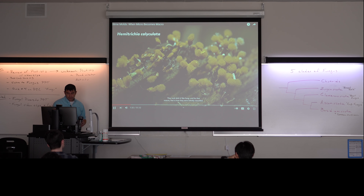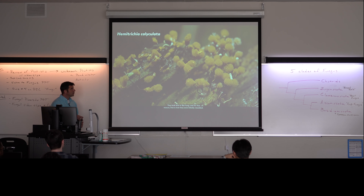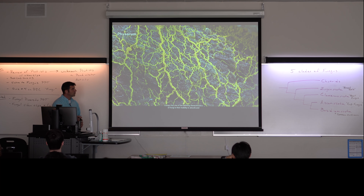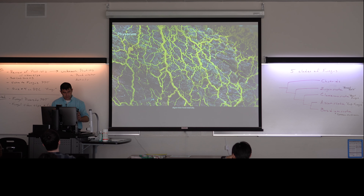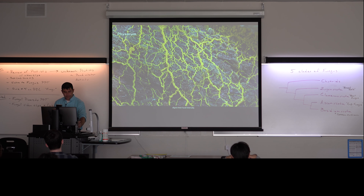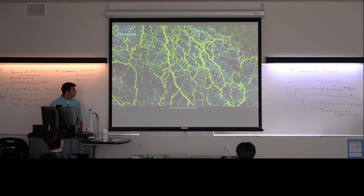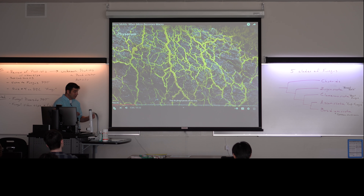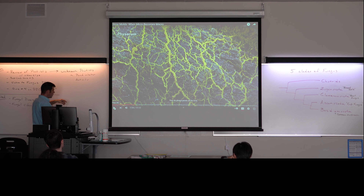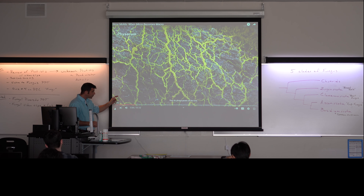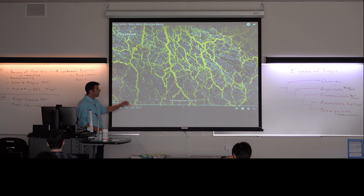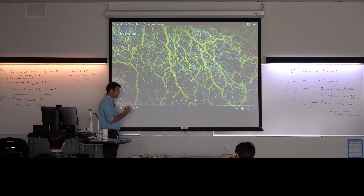They look kind of like fungi, and for that reason that is how they were initially classified. Except that one of the defining characteristics of fungi is their inability to absorb and digest their food internally — slime molds, however, are plenty capable of that. They do phagocytosis all the time. Just a quick distinction since we're about to introduce fungus: one thing that this plasmodial slime mold, which is a protist, and us and the fungus all have in common is that we're all heterotrophs — we can't make our own food. Our digestive enzymes are on the inside, so we have to swallow and ingest food to get it broken down. These plasmodial slime molds are like us — their digestive enzymes are on the inside, so they have to ingest food in order to break it down.